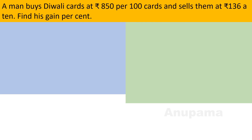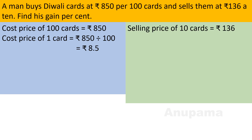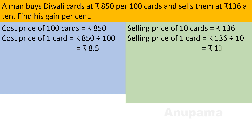Let us do one more question. A man buys Diwali cards at rupees 850 per 100 cards and sells them at rupees 136 for 10 cards. Find his gain percent. The cost price of 100 cards is rupees 850, so cost price per card is 850 divided by 100, which is rupees 8.5. The selling price of 10 cards is rupees 136, so selling price per card is 136 divided by 10, which is rupees 13.6.